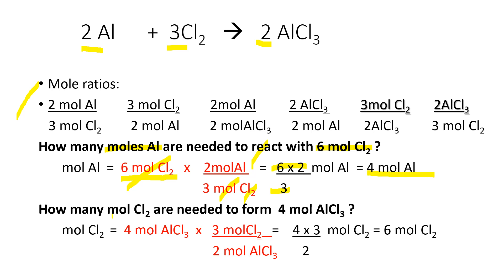How many moles of Cl₂ are needed to form 4 moles of AlCl₃? Given times conversion factor — unknown Cl₂ on numerator, given AlCl₃ on denominator — cancel moles of AlCl₃: 4 times 3 divided by 2 gives 6 moles of Cl₂. The coefficients 3 and 2 come from the balanced equation — 3 moles of Cl₂ and 2 moles of Al.